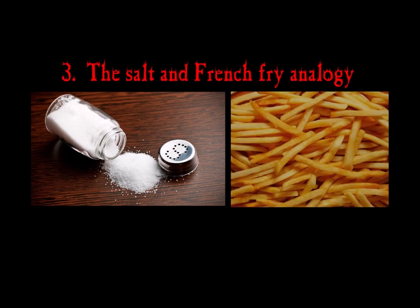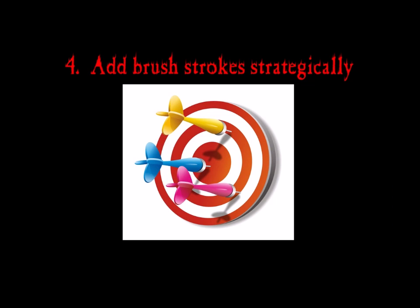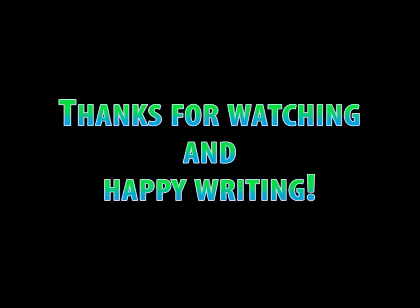Always remember the salt and french fry analogy. A little salt on your french fries is a good thing — it adds just a little flavor to the potatoes that makes the entire experience more enjoyable. But if you dump an entire container of salt on your fries, burying the poor things beneath an avalanche of white crystals, the bitterness will ruin the experience completely. The same kind of bitterness occurs in writing when too many brush strokes smother the passages. Add brush strokes strategically — a brush stroke in every sentence is most definitely overkill. Pick your spots carefully. When you have an important action scene or are introducing a new character, brush strokes can paint a lot of specific detail in an efficient manner. Just remember that too much of a good thing can definitely be a bad thing. And that's it for this training module. I hope you've enjoyed learning about the magic of brush strokes. Thanks for watching, and happy writing.